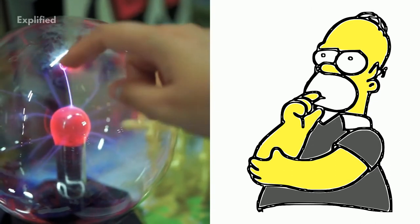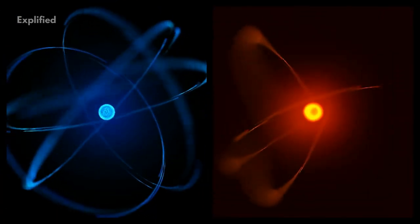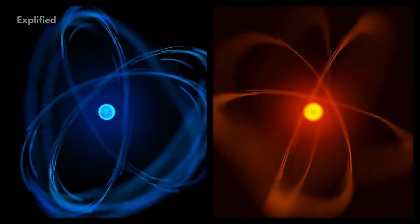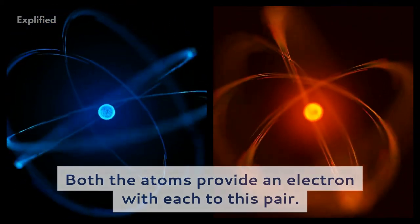Lewis assumed that atoms attain noble gas electronic configuration in the process of bond formation. He proposed that this is achieved by sharing of a pair of electrons between two atoms. Both atoms provide an electron each to this pair.